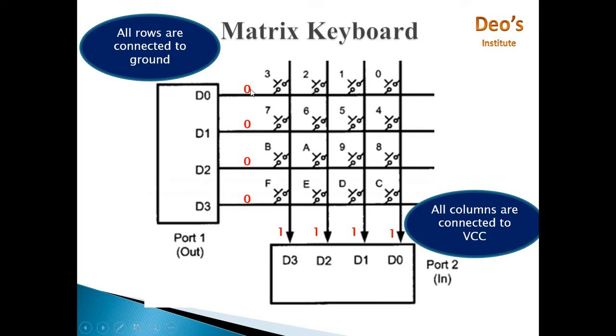So we have 0 0 0 0 at port 1, and all columns are connected to VCC, so we have 1 1 1 1. When any key is pressed, let's say when key 1 is pressed, then this D0 line from port 1 and D1 line from port 2 will get shorted.